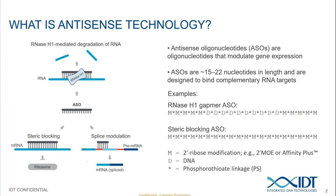Antisense oligos are synthetic nucleotides designed to modulate gene expression. They're typically around 15 to 22 nucleotides in length and are designed to be reverse complements to their RNA targets. There are a couple of different mechanisms of action: RNaseH1 gapmer antisense oligos, which are designed to cleave and degrade their target RNA, or steric-blocking antisense oligos, which are designed to block biomolecules such as nucleic acids or proteins from binding at that site.